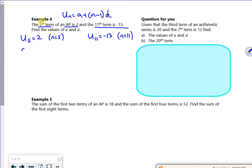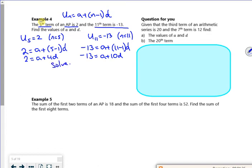Right then, so for this first one, 2 is a plus 5 minus 1d. So 2 is a plus 4d. For this one, minus 13 is a plus 10d. Now I can solve these simultaneously. And that will give me an a value of 12 and a d value of minus 2.5.